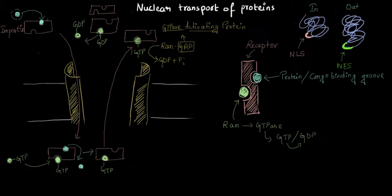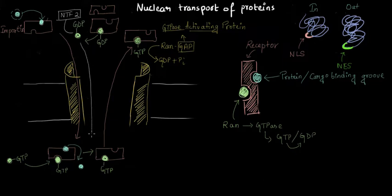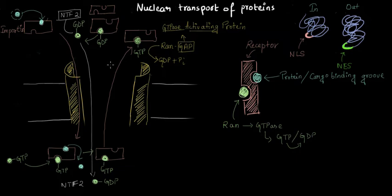Since RAN remains in the cytosol, its concentration inside the nucleus would deplete. To fix this, another factor called NTF2 — Nuclear Transport Factor 2 — binds to RAN-GDP and brings it back inside the nucleus. The NTF2 that carried RAN in can then move back out through the nuclear pore complex on its own without requiring a receptor. This way, the concentration of RAN inside the nucleus remains intact.